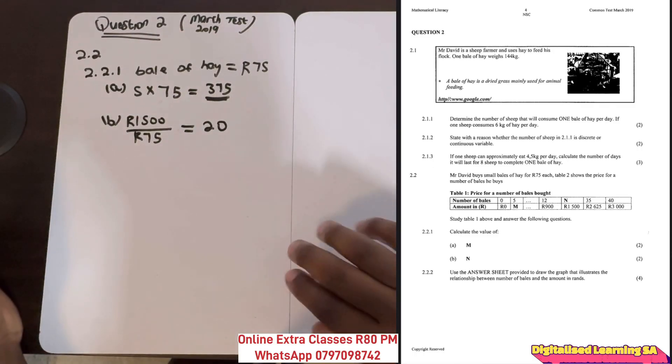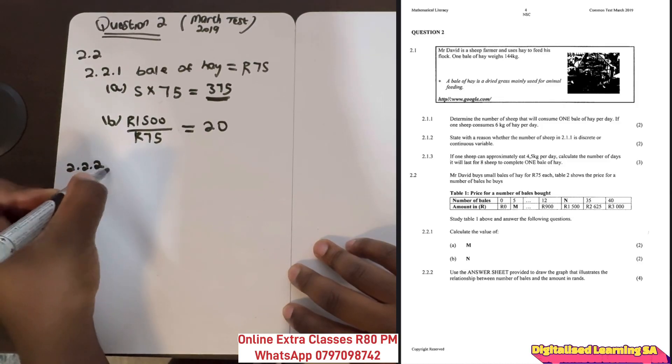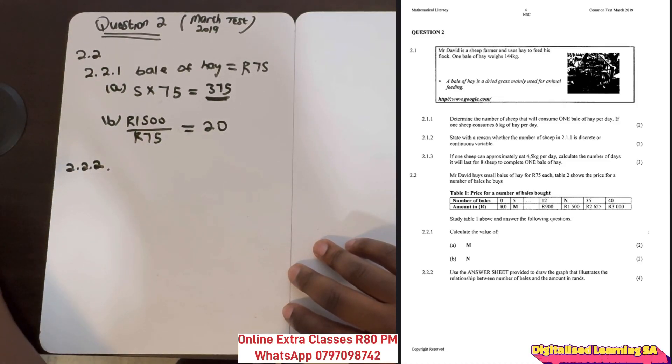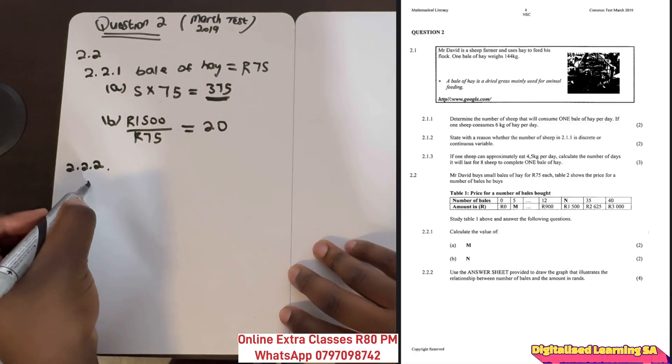Now let's move to question 2.2.2. The question says to use the answer sheet provided to draw a graph that illustrates the relationship between the number of bales and the amount in rent. To answer this question, we need to draw the graph.